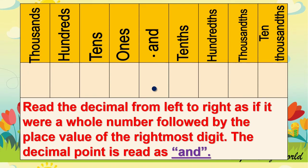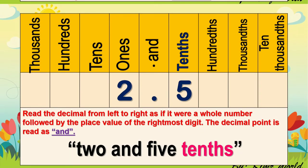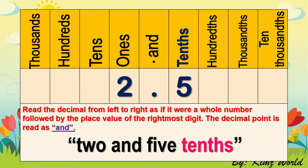Let us have the following examples. So we have the number 2, then point, and 5. Read it from left to right: 2, read the point as 'and,' 2 and, then 5, and then say the place value of digit 5 because it is the last digit on the right side. So this number is read as '2 and 5 tenths.' Again, 2 and 5 tenths. That is how we read the number.